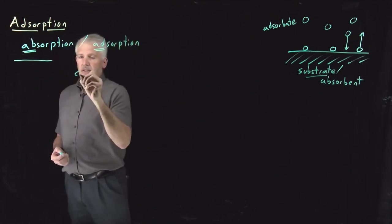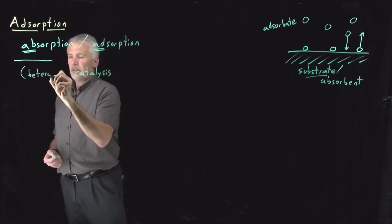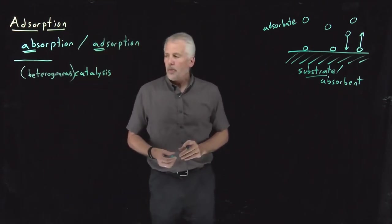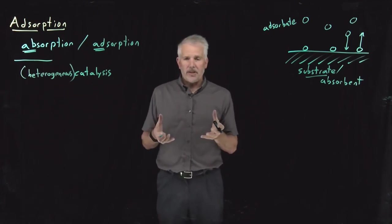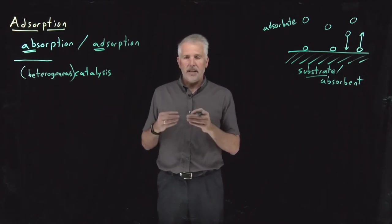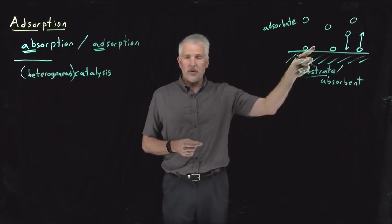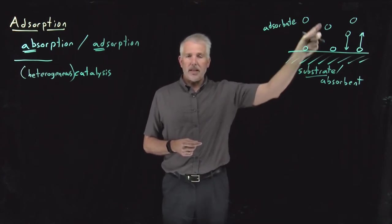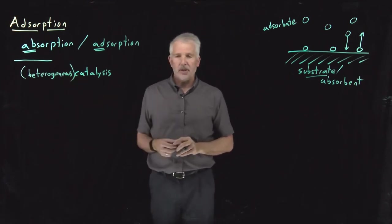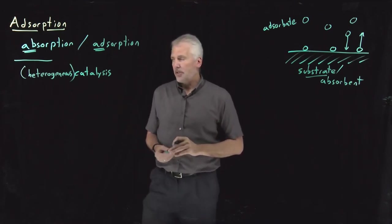One of those is catalysis, in particular heterogeneous catalysis. When I have a catalyst particle, I might have a reaction taking place in the solution phase, but I have solid catalyst particles at the surface of which the catalysis takes place. So the reactants have to adsorb onto the surface of the catalyst particle, the reaction takes place, and then they desorb off of the catalyst particle. The rate at which adsorption takes place, or the amount of adsorbed species, can be important in determining how well catalysis is going to work.